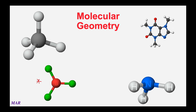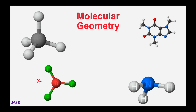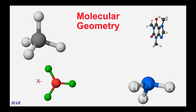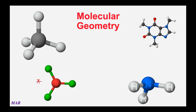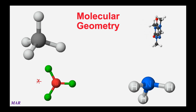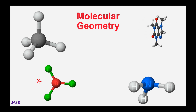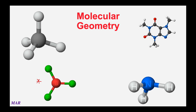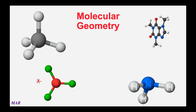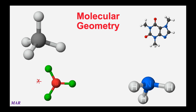Boron trifluoride is this thing in the lower left-hand corner, and it's actually an example of a flat molecule. You'll notice that the angles of the BF bonds are about 120 degrees. So if you were to draw BF3, you probably wouldn't draw it like that, but that's the way it actually is.